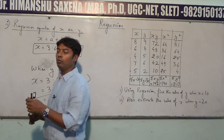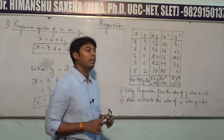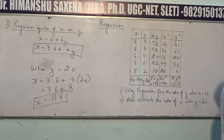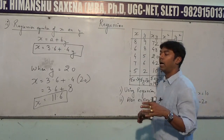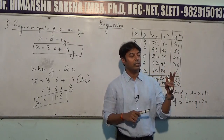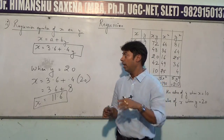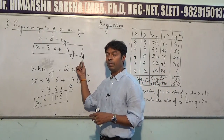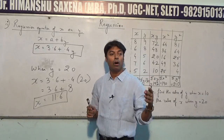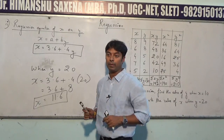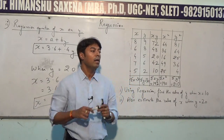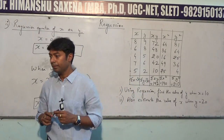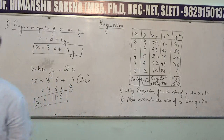So this is the purpose of regression — it is used for forecasting or estimation of values. Values are estimated by establishing a relationship between two variables, and then you can put the value of one variable to determine the value of another variable. That is the purpose of regression.